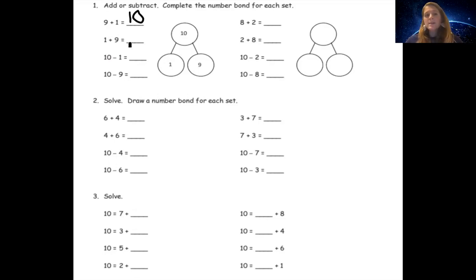And then we know one plus nine is again 10. Somehow I changed the width of my marker and I have no idea how I did that. And then 10 minus one, we know if we go this way, 10 minus one equals nine. We know that 10 minus nine equals one. Good.